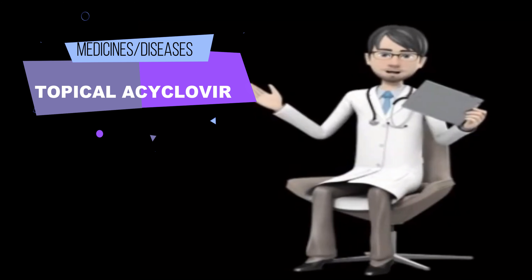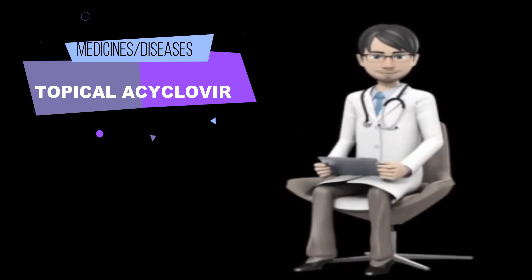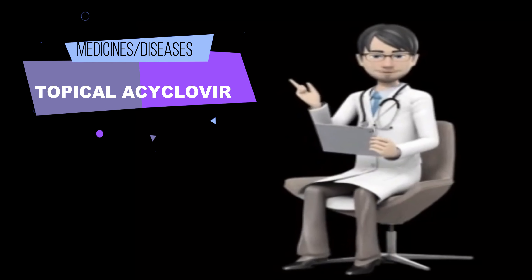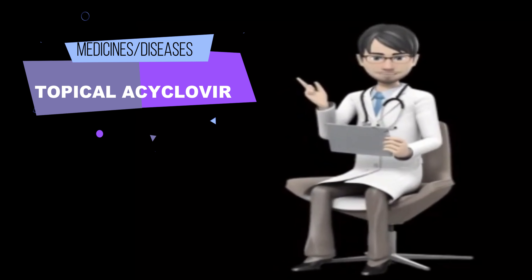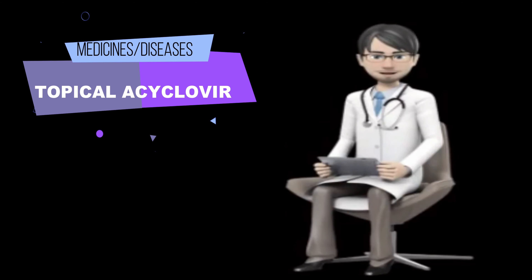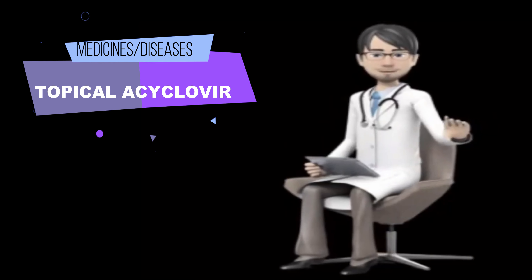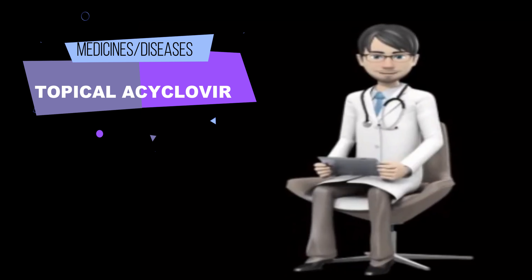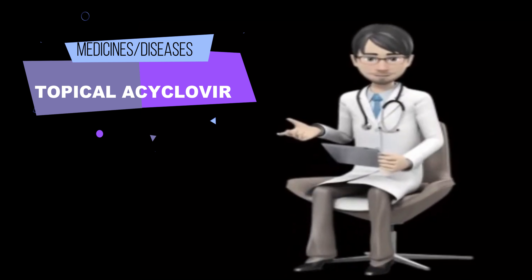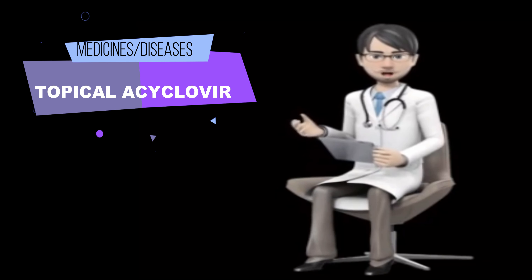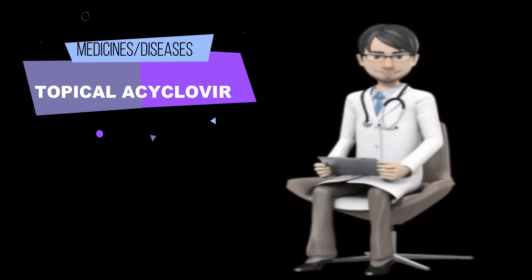To use acyclovir ointment, follow these steps. Put on a clean finger cot or rubber glove. Apply enough ointment to cover all of your sores. Take off the finger cot or rubber glove and dispose of it safely, so that it is out of reach of children. Keep the affected areas clean and dry, and avoid wearing tight-fitting clothing over the affected area.